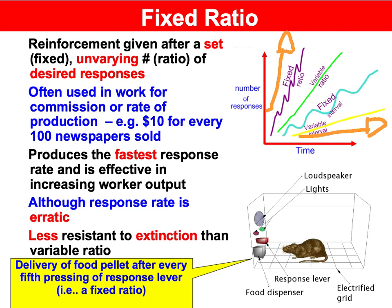Fixed ratio can be defined as providing reinforcement after a set, fixed, unvarying number of desirable responses. For example, getting paid to deliver junk mail, where you're not getting paid for every single item you deliver, but rather on a ratio. So you might get a box of a thousand brochures and get 50 bucks for delivering the whole box. Fixed ratio.